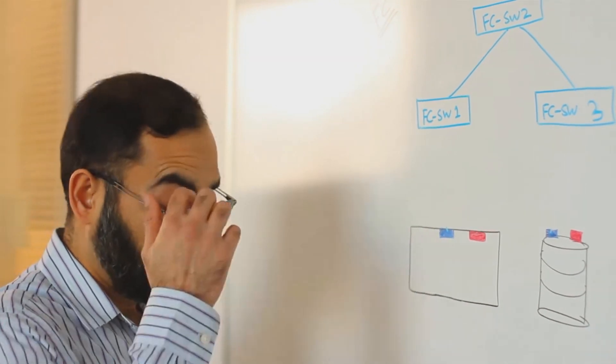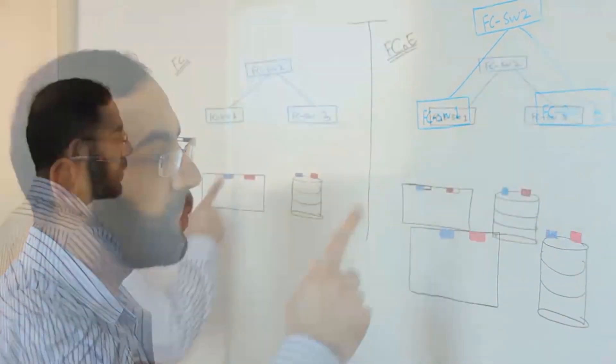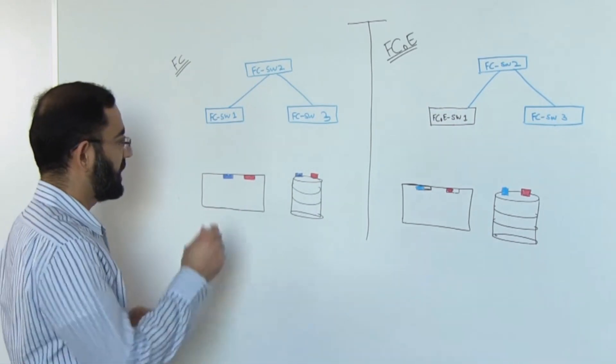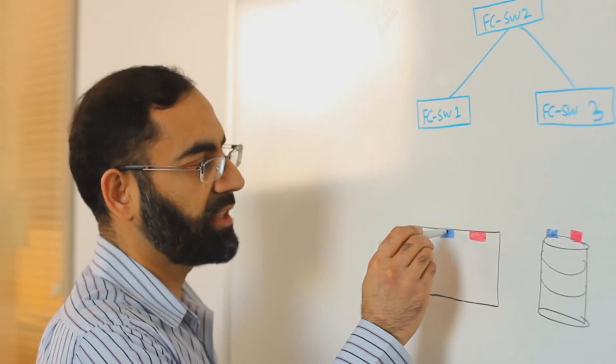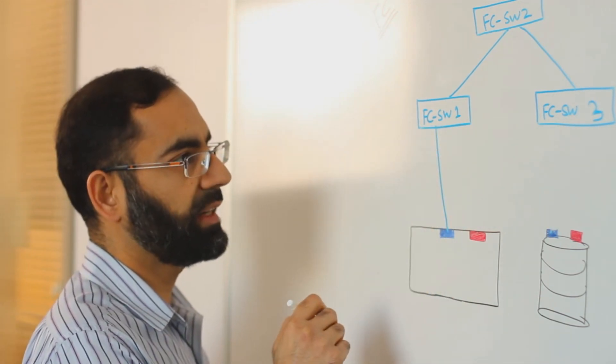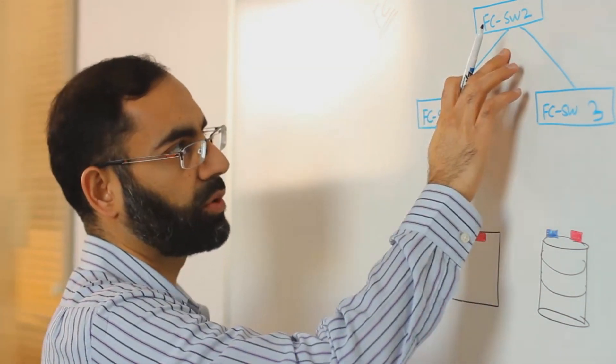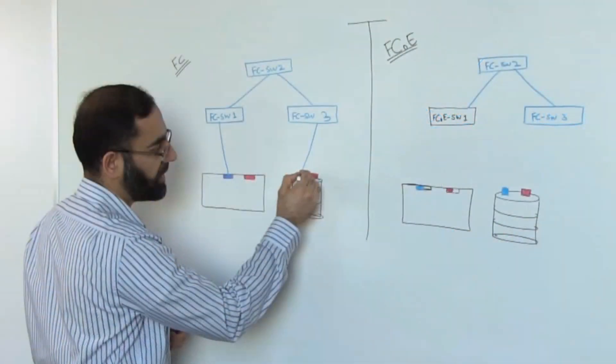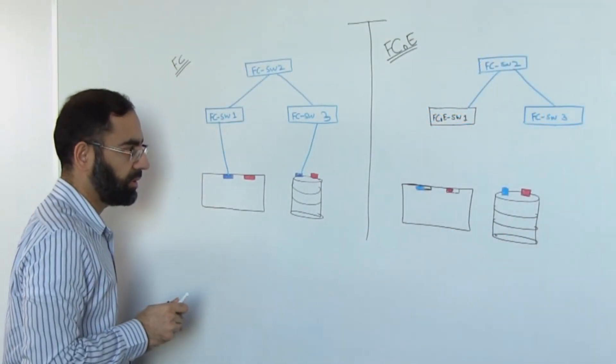The way the fabric will get built out is the HBA that is going to be connected to Fabric A is going to connect to the edge switch. Edge switch is connected to a core switch, core is connected to another edge, and that edge switch is connected to Fabric A port of the storage.